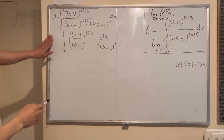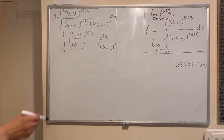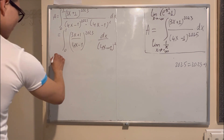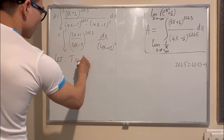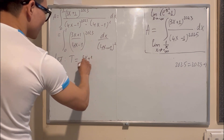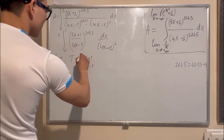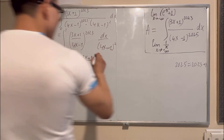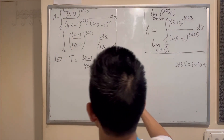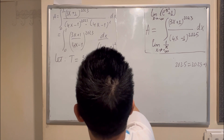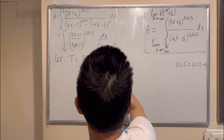Now I will sort out this integration. I will let t equal (3x + 1) over (4x − 1). Now I do differentiation on both sides.